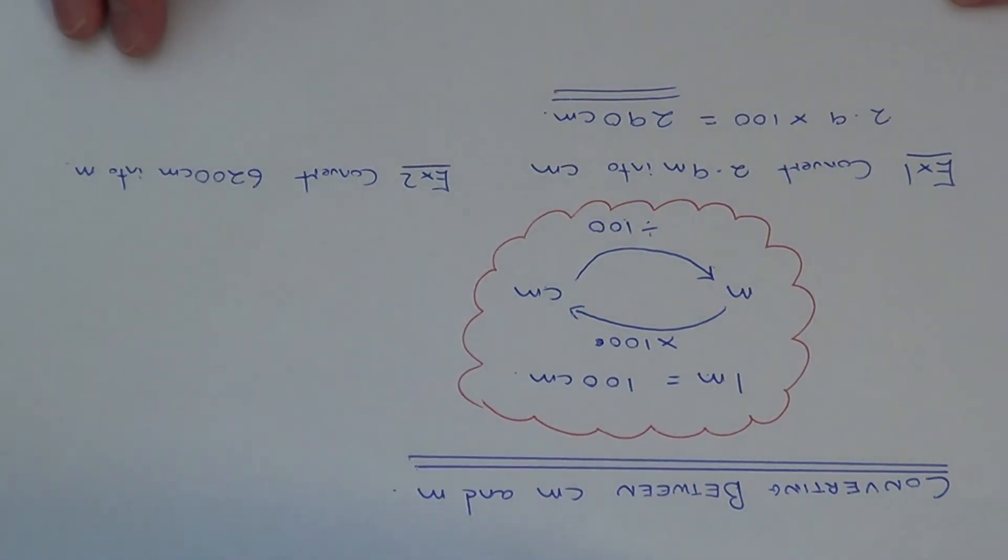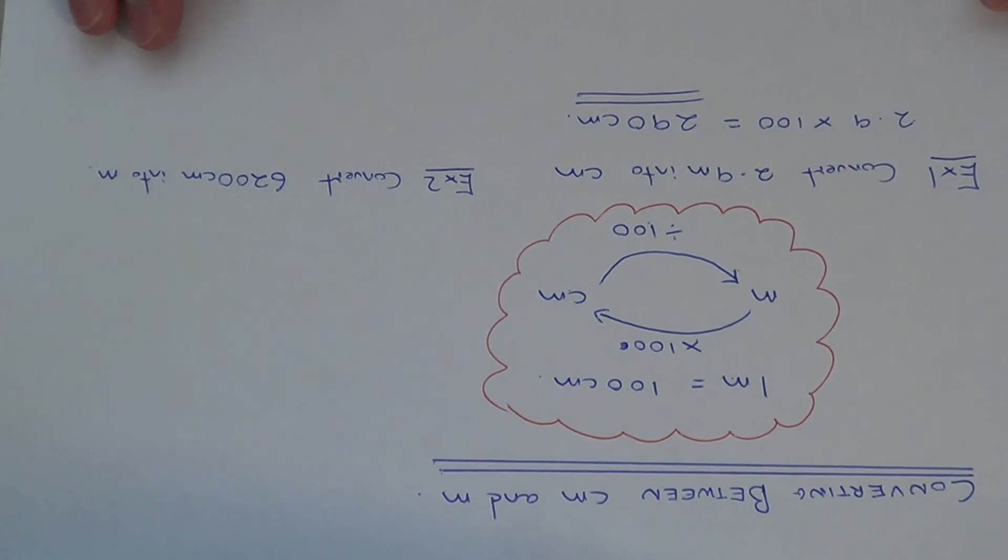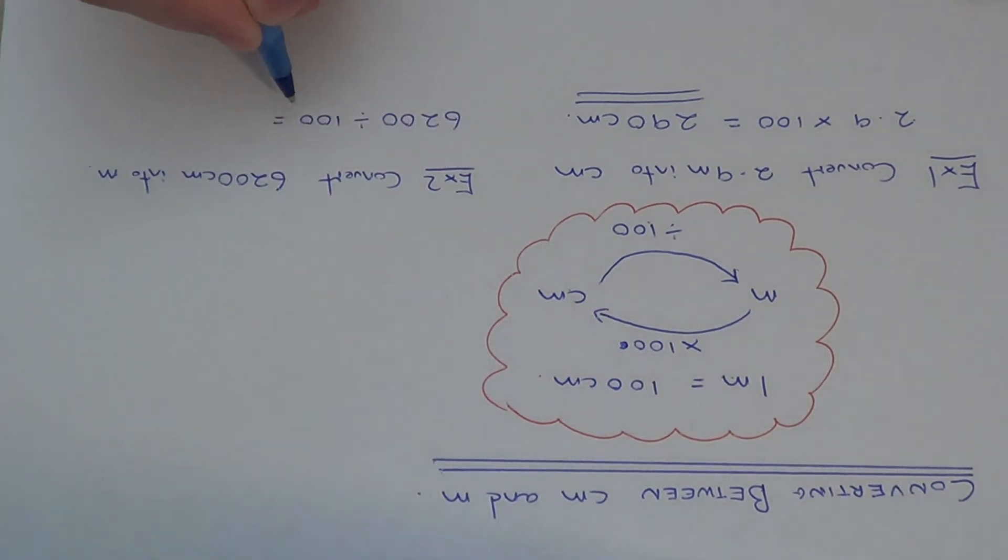Let's look at our second example. We need to convert 6,200 centimeters into meters. This time we're going from centimeters into meters, so we work out 6,200 divided by 100, which gives 62 meters.